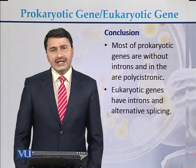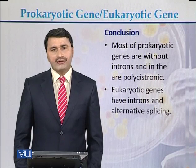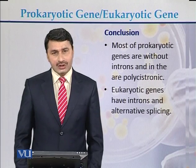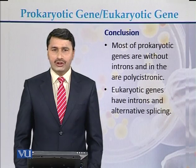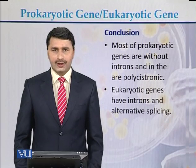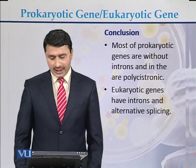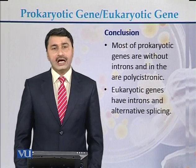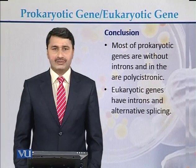The key difference between prokaryotic and eukaryotic genes: most prokaryotic genes are without introns and are in the form of polycistrons, while eukaryotic genes have introns and also exhibit the phenomenon of alternative splicing.